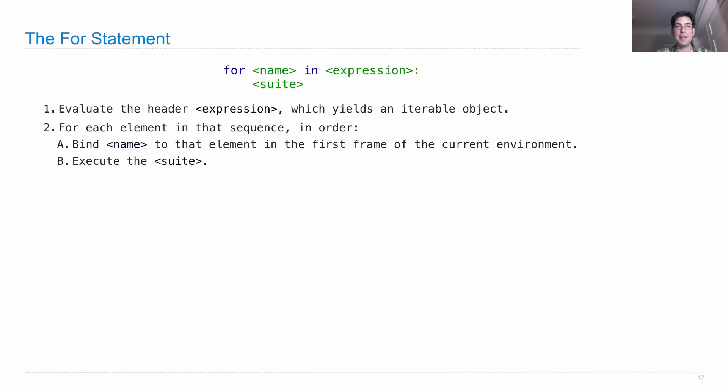What happens is that the iterable object that's the value of the expression provides an iterator, which gives you access to each element in that sequence in order. And so by invoking next on that iterator, we get the value that we want to bind the name in the first frame of the current environment before we execute the suite.